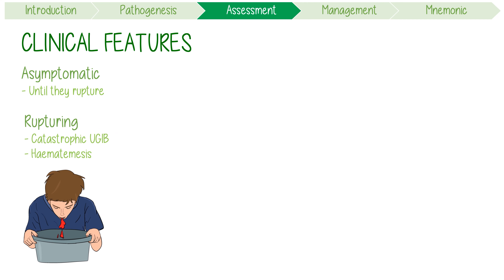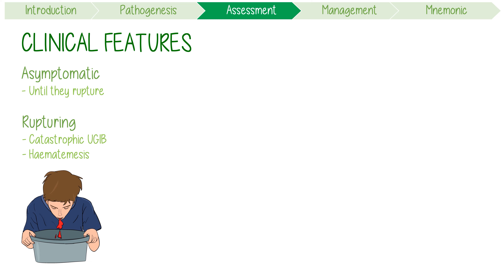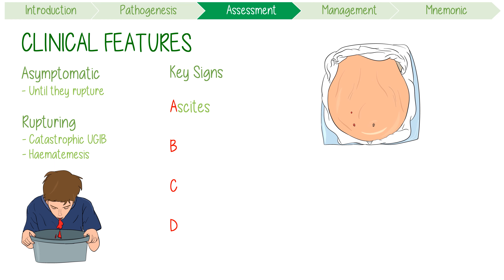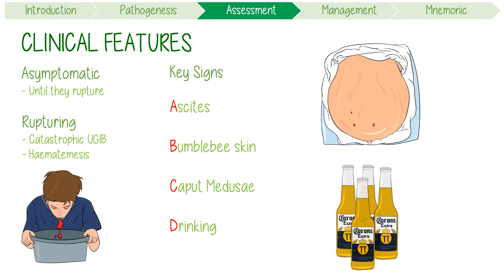Outside of this, remember four key signs that might indicate someone has asymptomatic varices. Think of the ABCDs of liver cirrhosis: ascites, jaundice causing bumblebee-coloured skin, caput medusae, and a patient with a history of drinking.